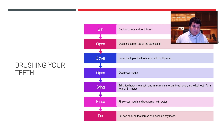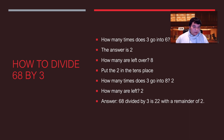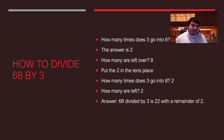The next example is math — how to divide 68 by 3. How many times does 3 go into 6? Two. How many is left? 8. So you put the 2 in the tens place. How many times does 3 go into 8? Again, 2. How much is left? The remainder of 2. So 68 divided by 3 is 22 with a remainder of 2.